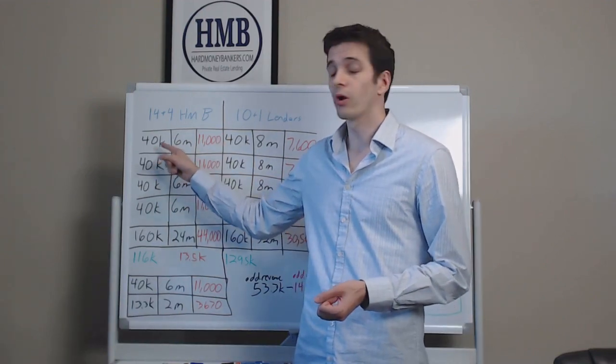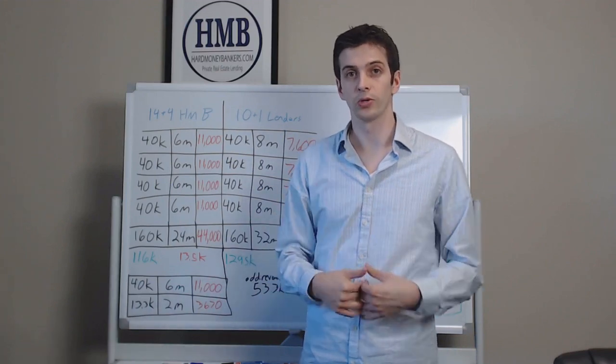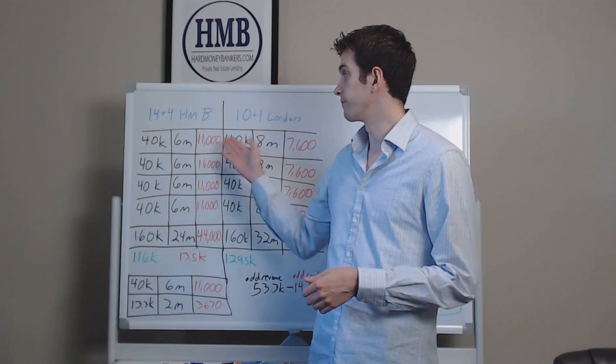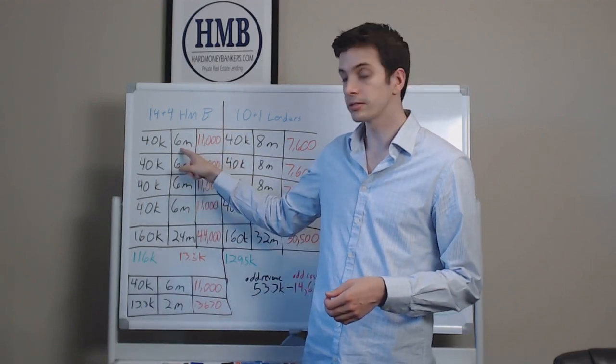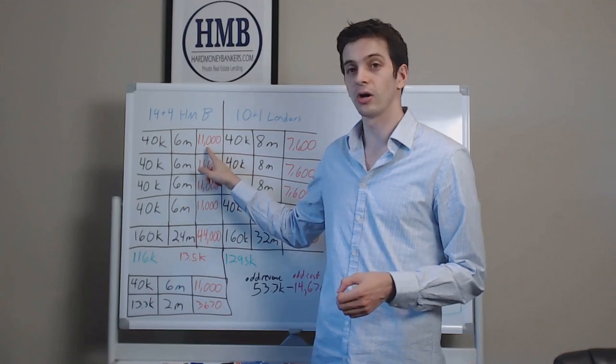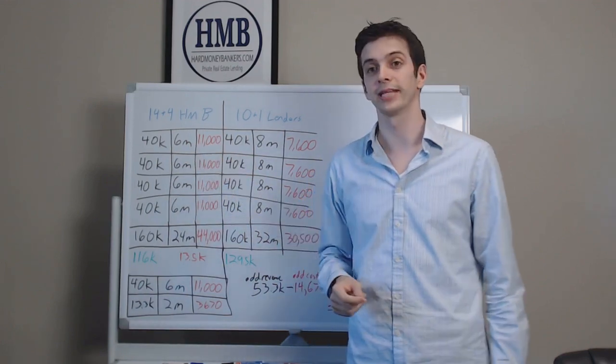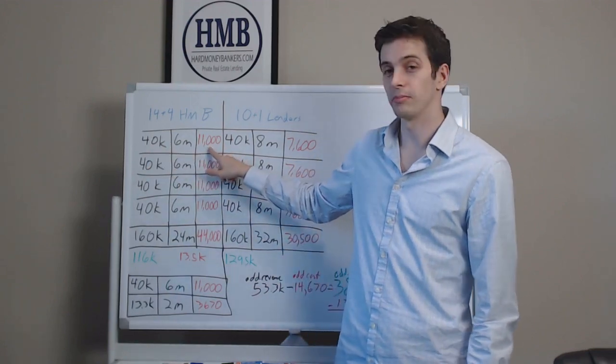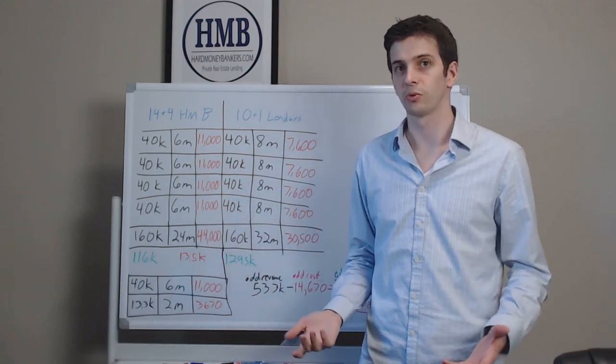So for one flip, you want to be making as the flipper $40,000. This is before you take out your lender's cost. So if you were to work with HMB, you're doing a flip, you'd be in it for about six months. The HMB cost after four points and a little over 1% a month equates to about $11,000. So if you're making $40,000, HMB will cost you about $11,000. You'll sit in your pocket about $29,000.